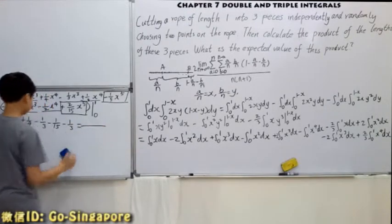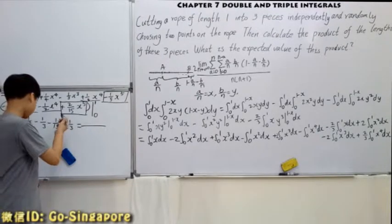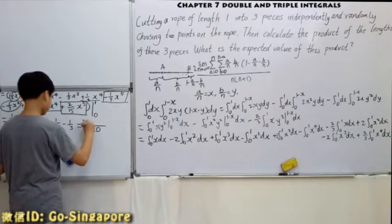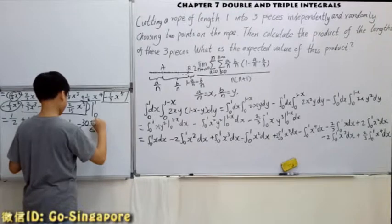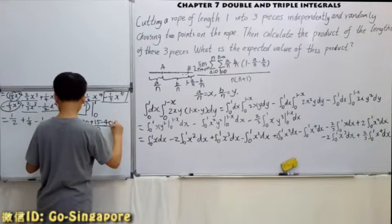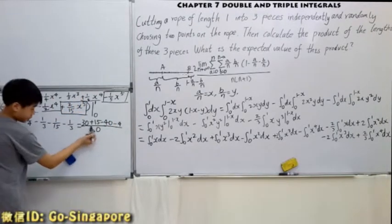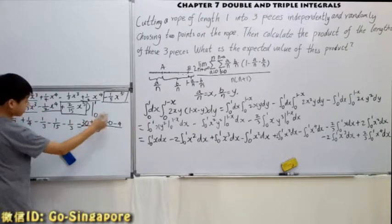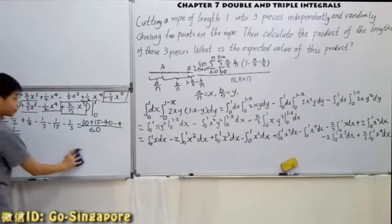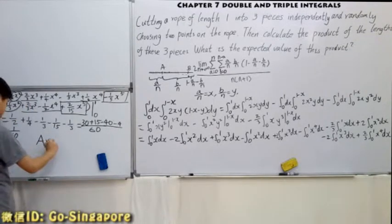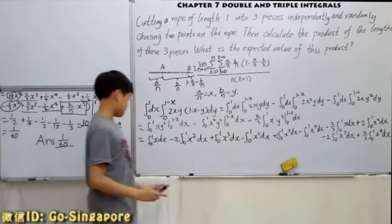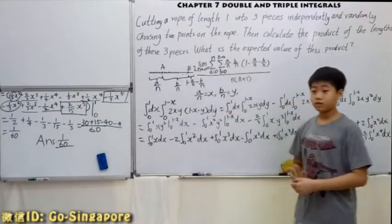Using common denominator — 15 times 4 gives 60. So we get 30 over 60, plus 15 over 60, minus 40 over 60, minus 4 over 60. So 30 plus 15 is 45, and 40 plus 4 is 44... then 5 minus 4 is 1. The last answer I got here is 1 over 60. So the answer is 1 over 60.